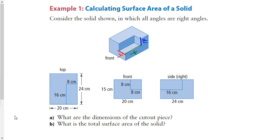Okay, so now we're starting section 1.3 — this is the last section of chapter 1. Section 1.1 was on line symmetry, dead easy; section 1.2 was on rotational symmetry, dead easy; and section 1.3 is the most complicated of the three units. It's on composite surface area — so it's not that hard, it's just much more difficult than the first two sections. We have this rectangular prism which has this area cut out right here.